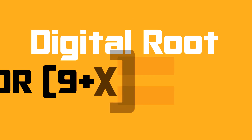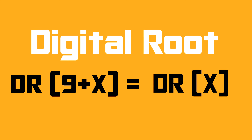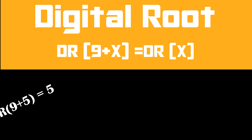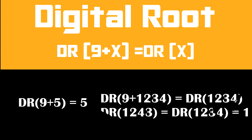Whenever we add 9 to a number, the digital root of the resultant will be the same as the digital root of the number we are adding to. For example, the digital root of 9 plus 5 equals 5, and the digital root of 9 plus 1234 equals the digital root of 1234, that is 1.